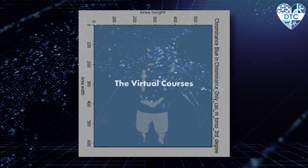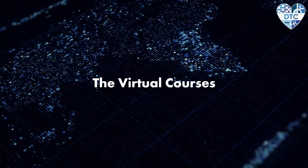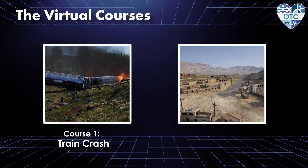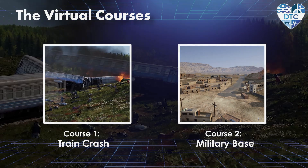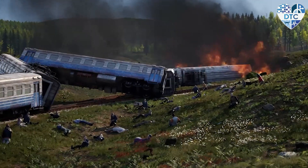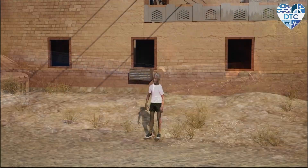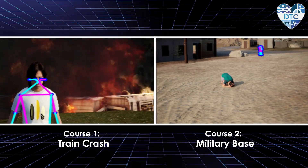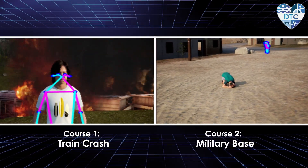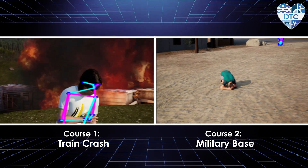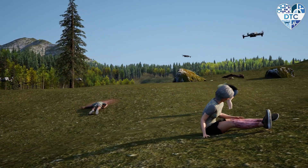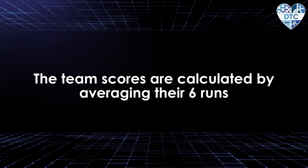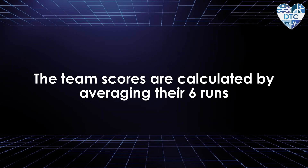Now let's introduce the courses. Two worlds were created: a train crash and a military base. Both are realistic scenarios for mass casualty situations involving military and civilian wounded. Competitor teams must navigate through these environments, identify casualties, and assess their injuries using simulated sensors such as infrared, lidar, and radar. Team scores are calculated by averaging their six runs.